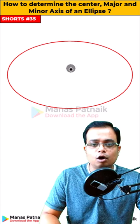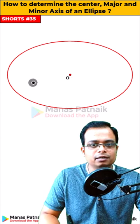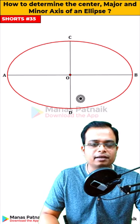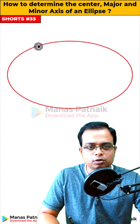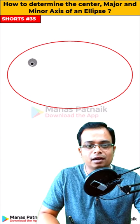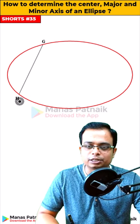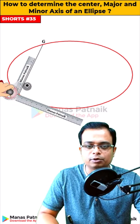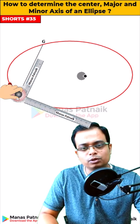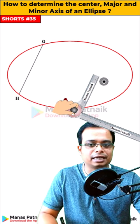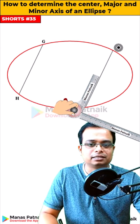We have an ellipse of which we need to find the center, the major and minor axis. The first thing to do is to make a chord like this — GH — then keep your drafter over here, tighten the screw, bring it over to the right-hand side, make this line, and let's say this is KL.